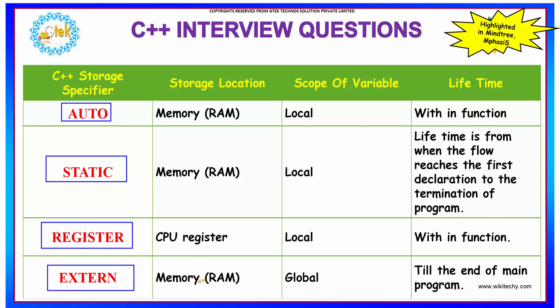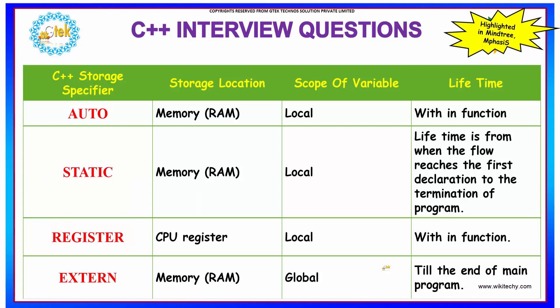Extern is stored in RAM and the scope is global, lasting till the end of the main program. That is, if your value is declared to be extern, then till the end of the main program, it maintains its scope.